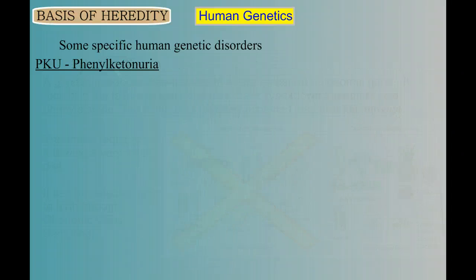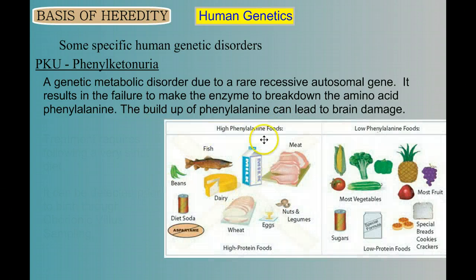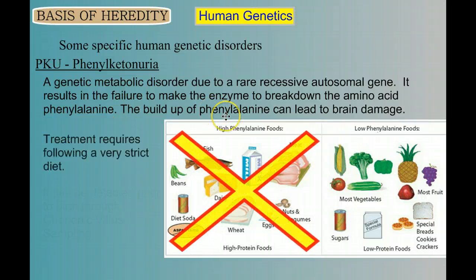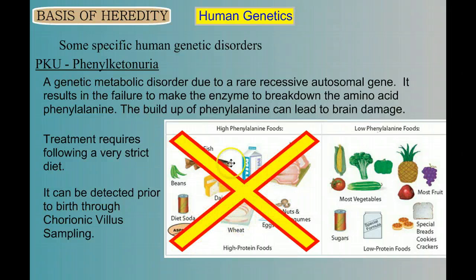PKU, or phenylketonuria, is a genetic metabolic disorder due to a rare but recessive autosomal gene, and it can result in the failure to make an enzyme that breaks down phenylalanine, which is an amino acid. If you don't break down phenylalanine, it can lead to brain damage. Phenylalanine is found in lots of protein-rich foods. The treatment for PKU is to follow a very strict diet. Furthermore, we can detect PKU prior to birth using chorionic villus sampling — taking a tissue sample from the chorion of the developing embryo. The pregnant mother then starts a very restrictive diet so that even before the baby is born, harmful chemicals don't build up in the brain and cause damage.